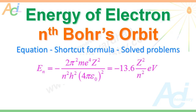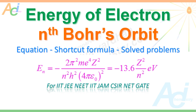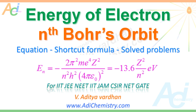Hello students, welcome. I am Adi Chavardhan from AdiChemistry.com, Varangal. In this presentation, you are going to learn how to solve problems easily by using shortcut formulae for energy of electron in Bohr's orbit of hydrogen atom and the chemical species which are isoelectronic with hydrogen atom. If you are searching for time-saving tips for IITJEE, NEET, IIT JAM, CSIR NET and GATE exams, then this video is for you.